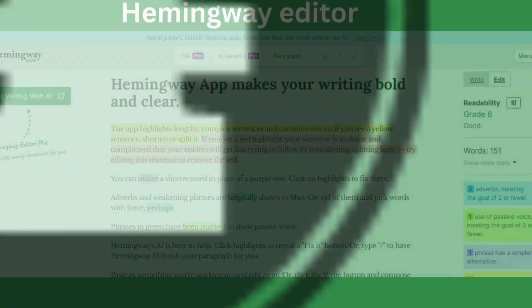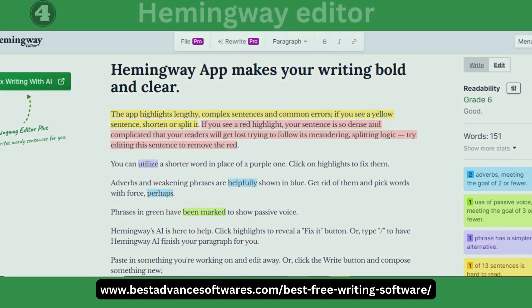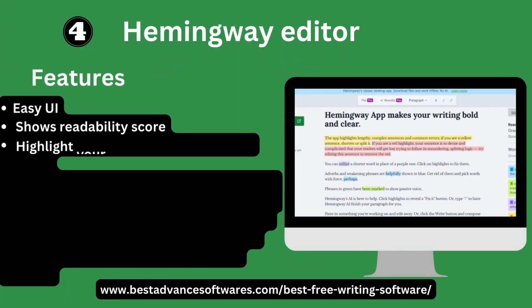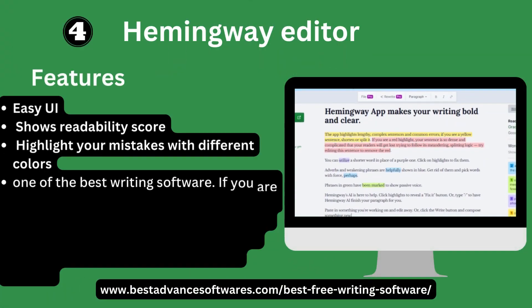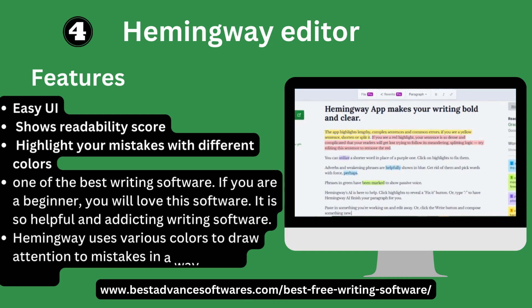Number four: Hemingway Editor. Key features include easy UI, readability score, and highlighting your mistakes with different colors. One of the best writing softwares — if you are a beginner, you will love this software. Hemingway uses various colors to draw attention to mistakes in your text, making editing simple.